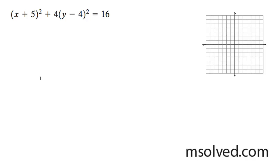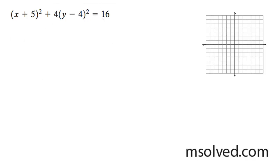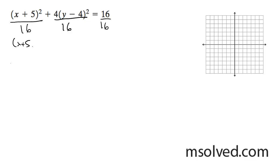So for this problem, for the ellipse, I want to go ahead and find the center, the foci, and the vertices. What I'm going to do first is divide through here — 3 by 16. So I end up with x plus 5 squared over 16, plus y minus 4 squared over 4, equal to 1.